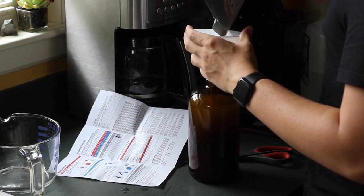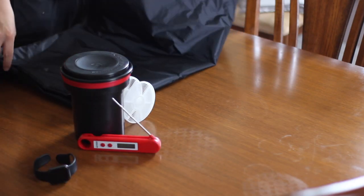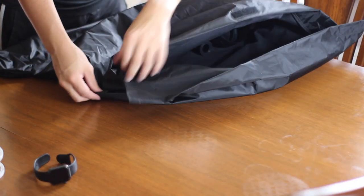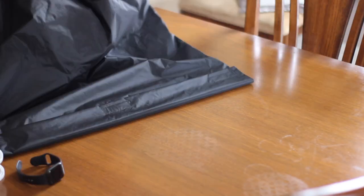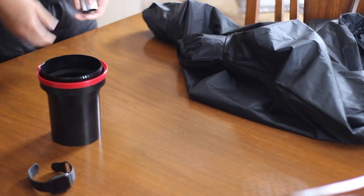Once you're done mixing, you're going to have your developer and your blix. Then you're going to want to load the film onto the reel in the tank, but you're going to want to do that in the bag so that no light gets exposed to the film. Once you've sealed the tank, you can take it out and get to the development process.